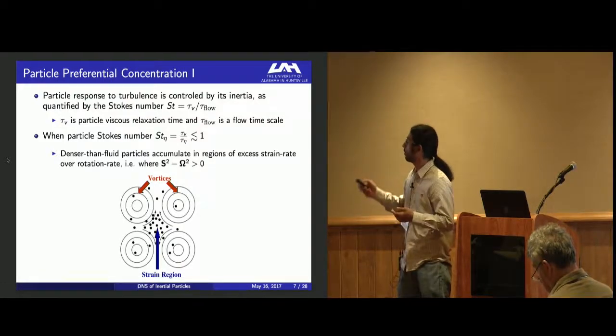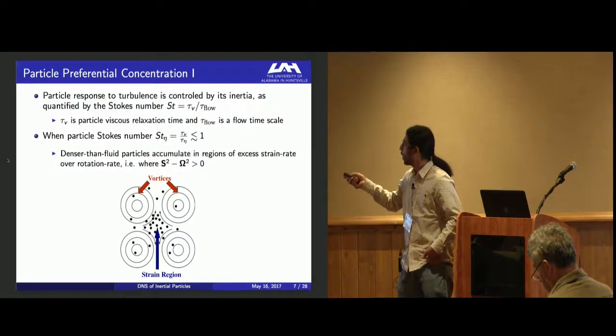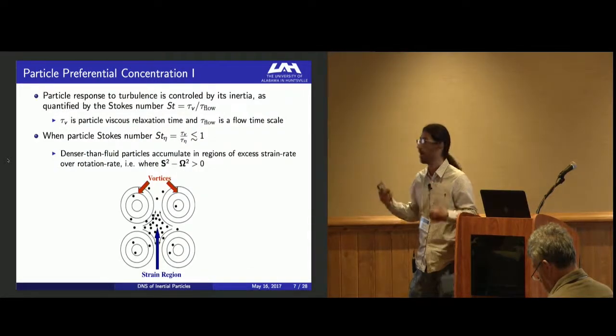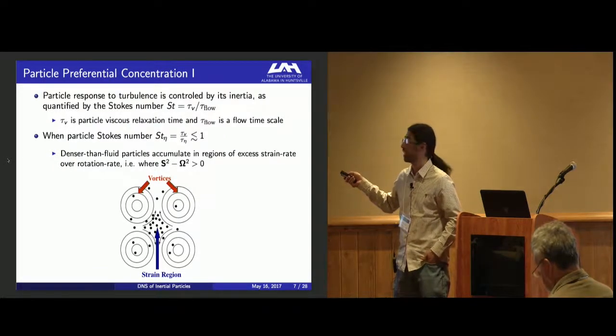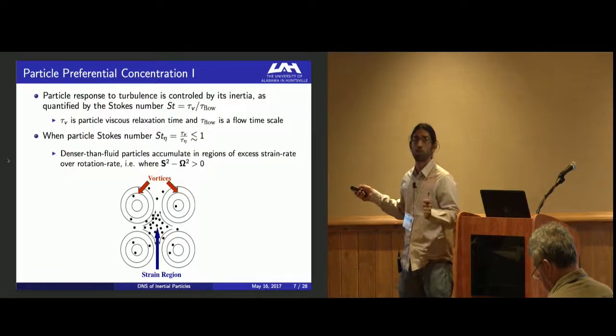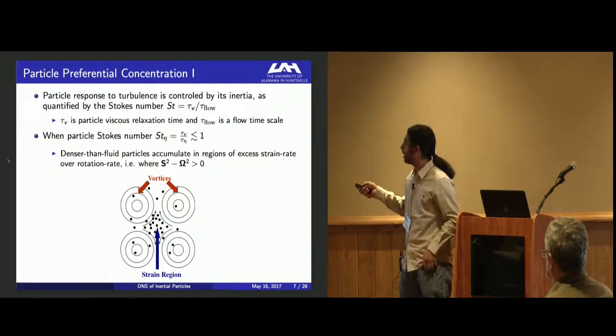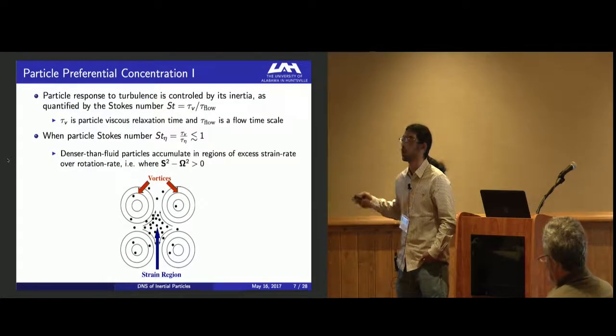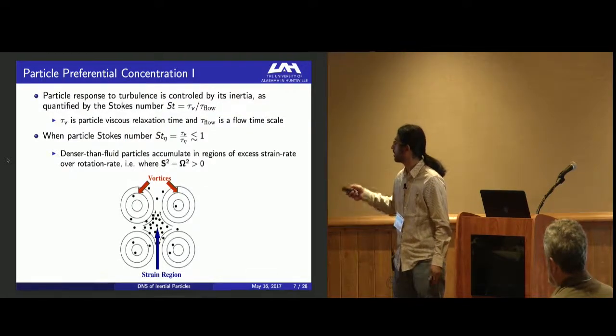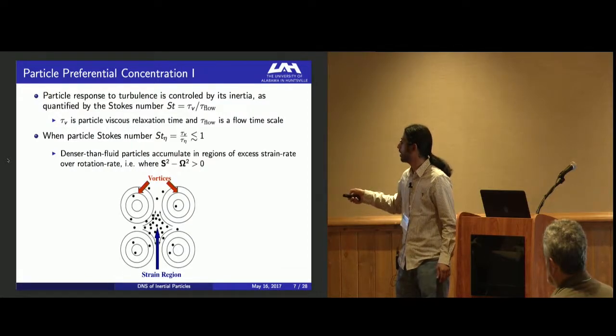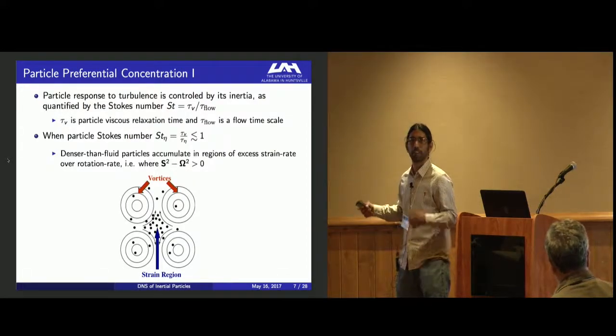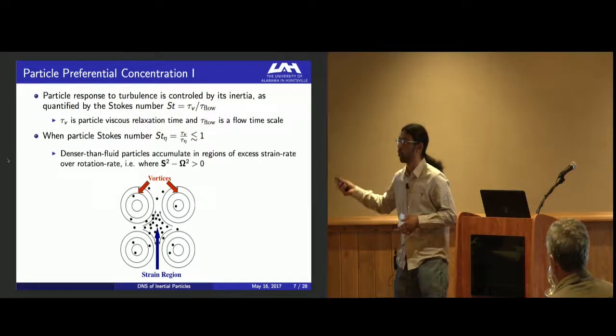Particle preferential concentration—there are a few non-dimensional parameters we need to be mindful of. The most prominent is the Stokes number, which quantifies the inertia for the particles, expressed as viscous relaxation timescale tau_p by the flow timescale tau_flow. When particle Stokes number based on Kolmogorov length scale St_eta is less than or of order one, then denser than fluid particles accumulate in regions of excess strain over rotation rate. Here s is the strain rate tensor and omega is the rotation rate tensor. Here's a schematic of such concentration happening. The high vorticity regions push out particles from these vortices into high strain rate regions.